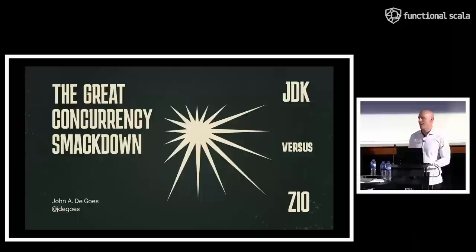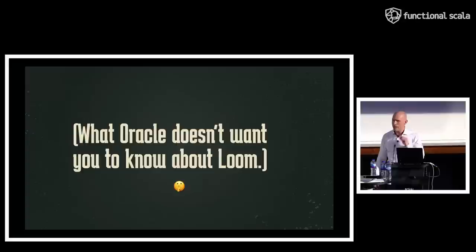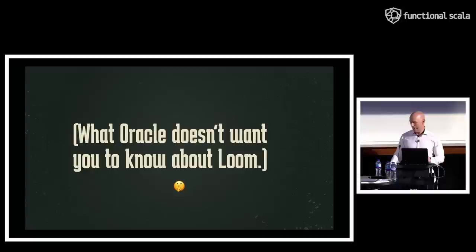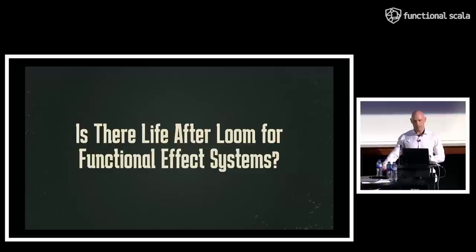Hello, everyone. I am here to talk to you about the great concurrency smackdown, JDK versus ZIO, in my presentation equipped with cheesy boxing graphics. If you don't like this title, I have a backup: 'What Oracle doesn't want you to know about Loom.' And more to the point, the real title is: is there life after Loom for functional effect systems?